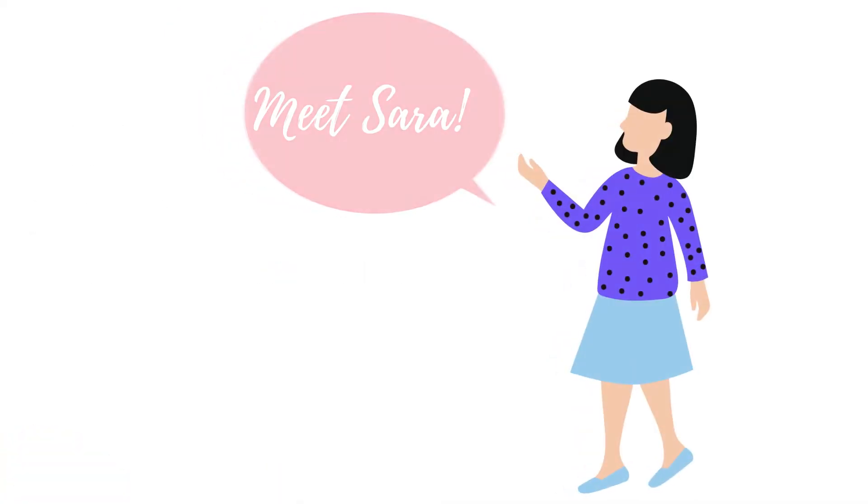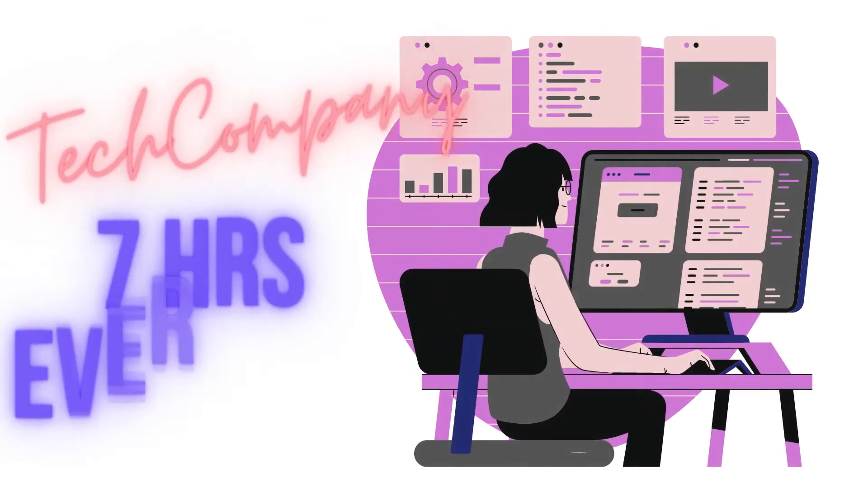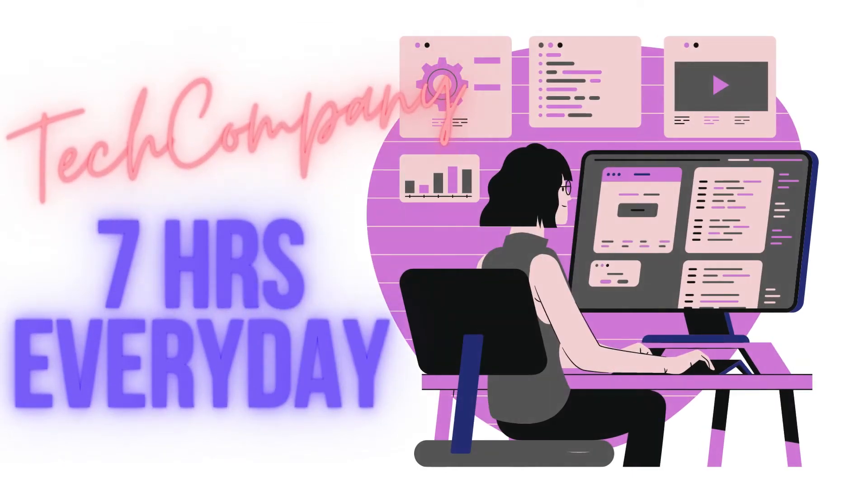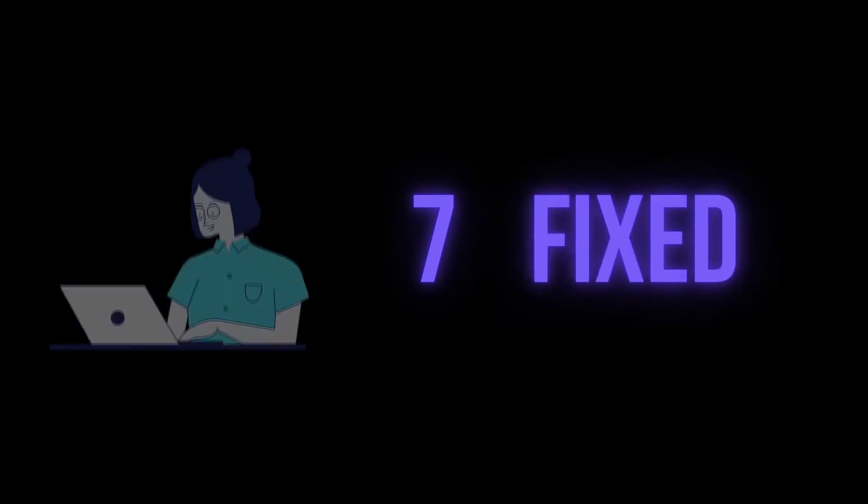Meet Sarah. Let's say Sarah works in a tech company for seven hours a day every day. So seven is the number of hours that is fixed and Sarah has to work seven hours every single day no matter what.